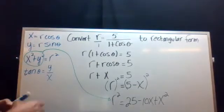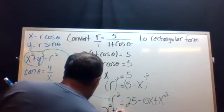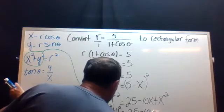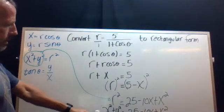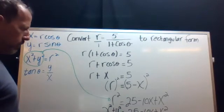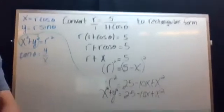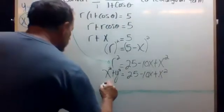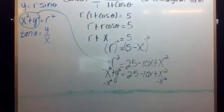So now we have x squared plus y squared equals 25 minus 10x plus x squared. And we can get rid of this x squared. Now we can just have it in terms of y by simply subtracting x squared on both sides.